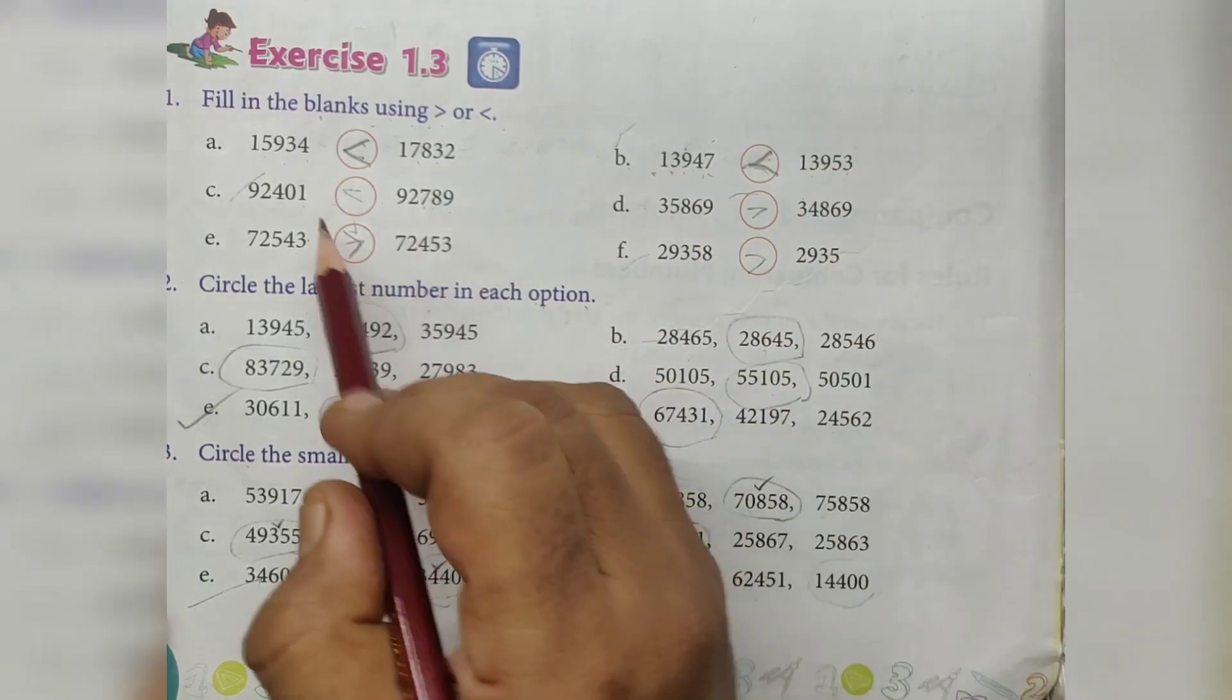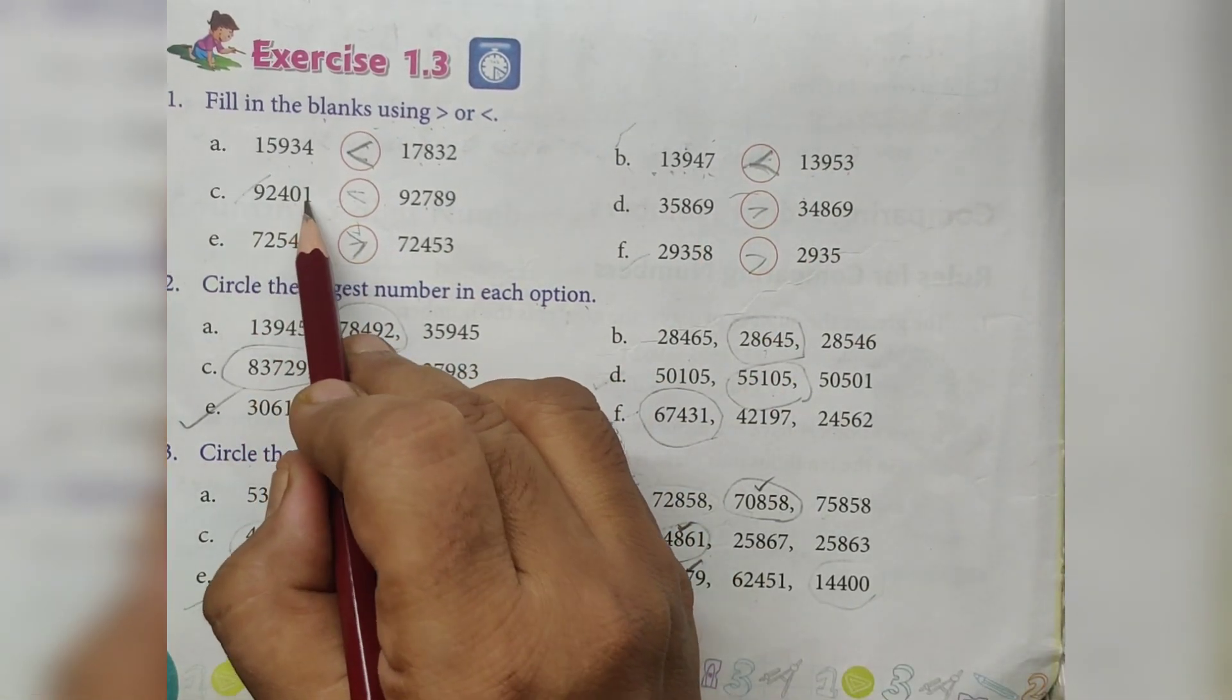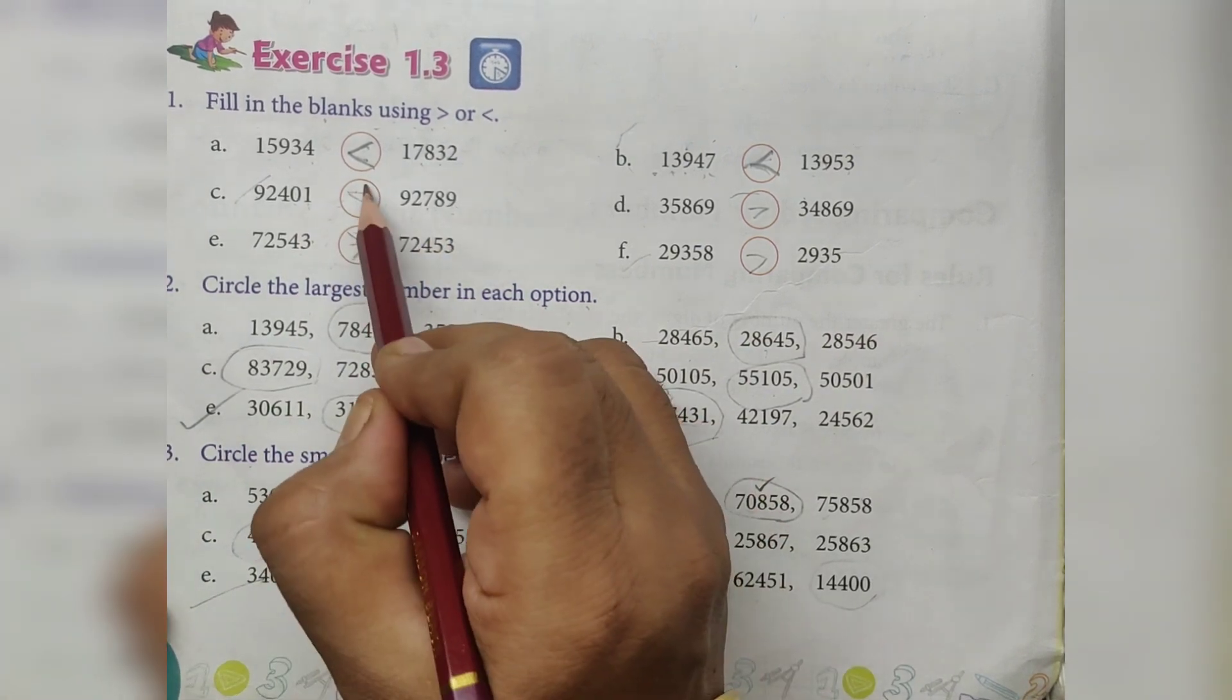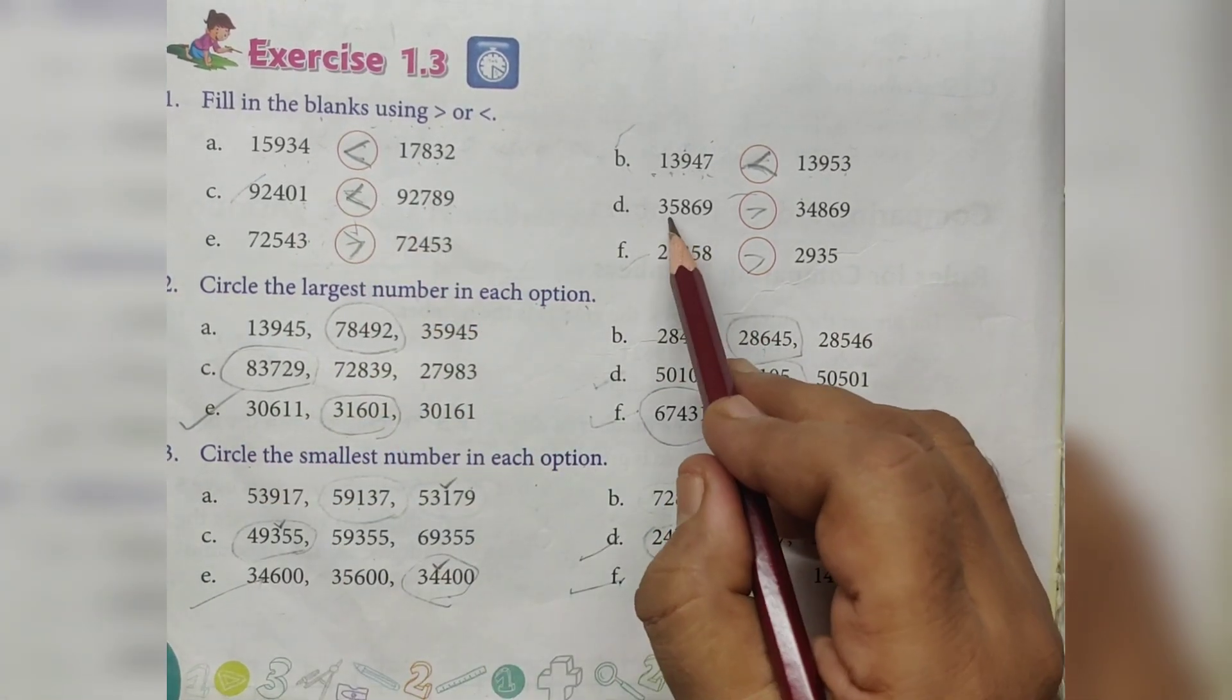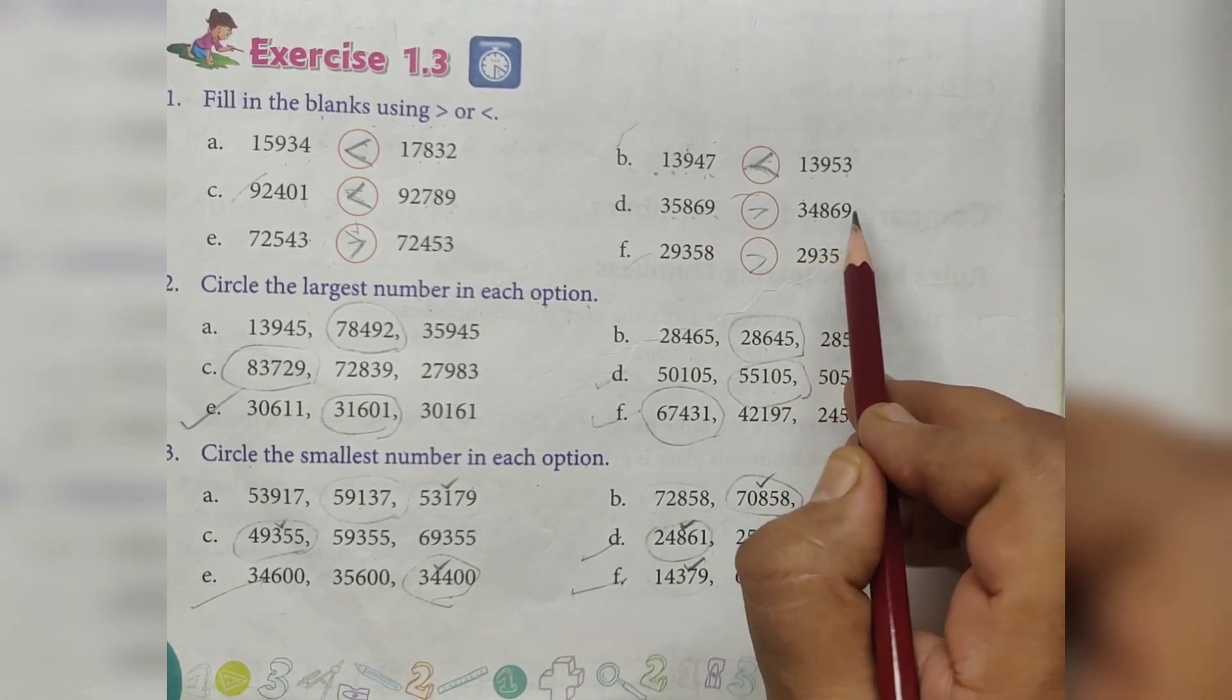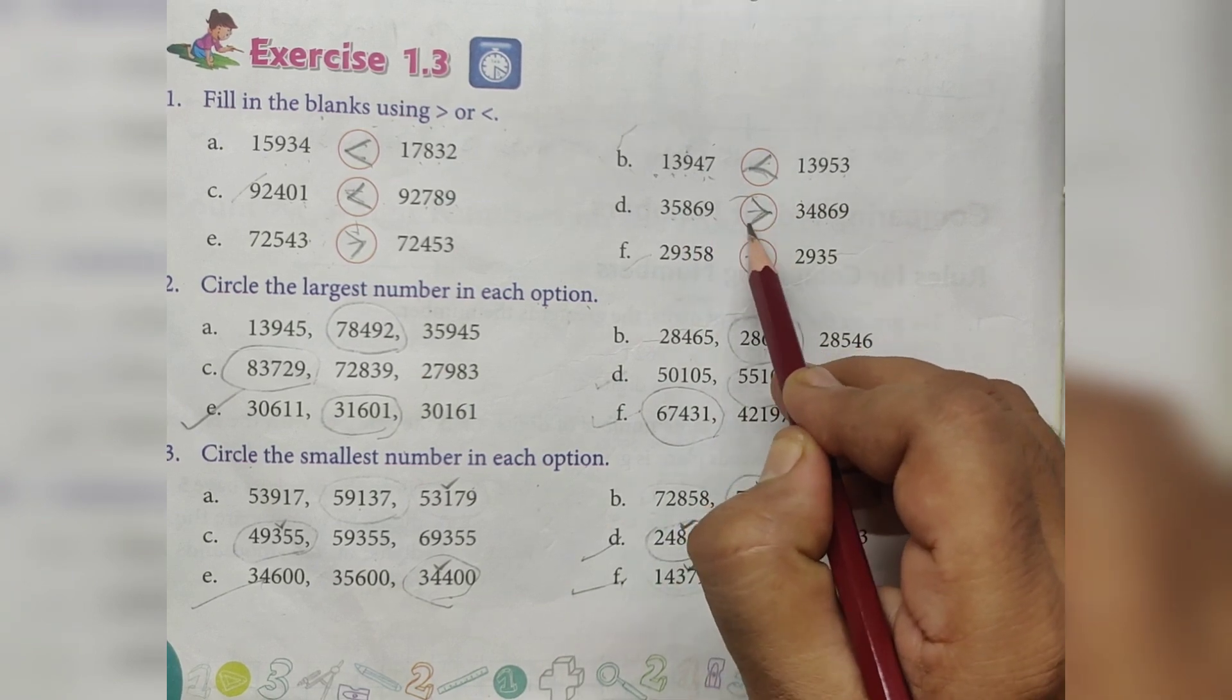92,401, 92,789, greater than. 35,869, 34,869, this is greater.